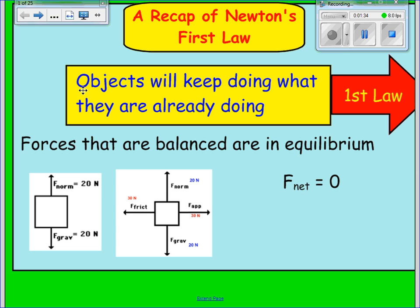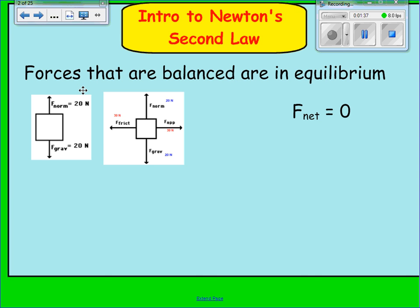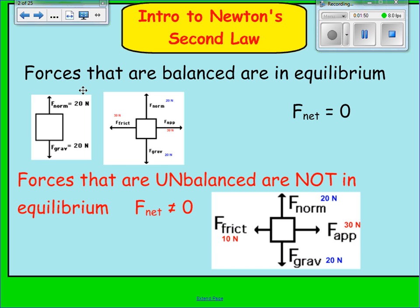That was a review of Unit 4, where objects are in equilibrium. In Unit 5, we deal with a different situation. Here, force gravity and force normal are both 20, so the object is in equilibrium in the y-direction. But in the x-direction, the force applied is 30 newtons to the right and 10 newtons to the left. In this case, the net force in the x-direction is not balanced — forces that are unbalanced are not in equilibrium, so the net force does not equal 0 but some other number.